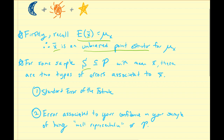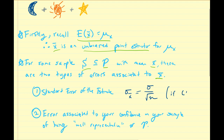Secondly, for some sample S — let's assume S is a simple, random, independent sample from the population P — let's assume that this sample has some sample mean x-bar. There are going to be two types of errors associated with this x-bar. The first is the standard error of the estimate, which equals the standard deviation of the population divided by the square root of n, when the central limit theorem holds. The second is the error associated with your confidence in your sample being well representative of P — tied to whether you think the sample size is large, whether it's random, simple, and so on.